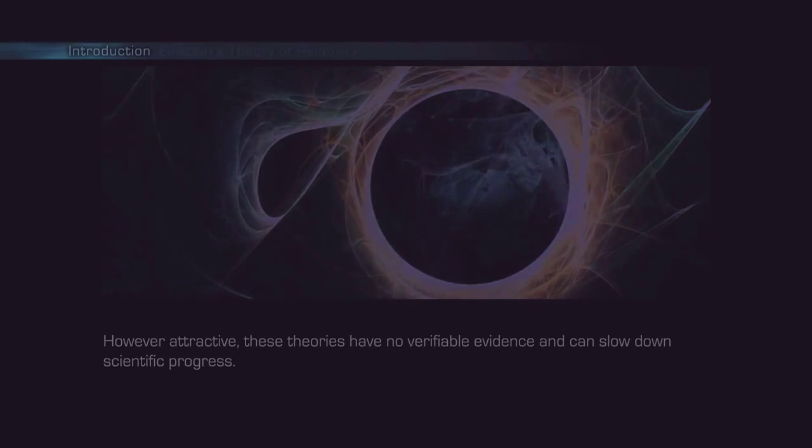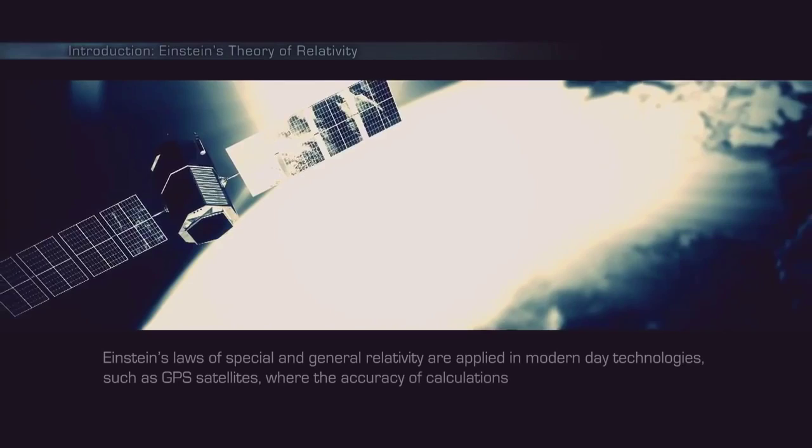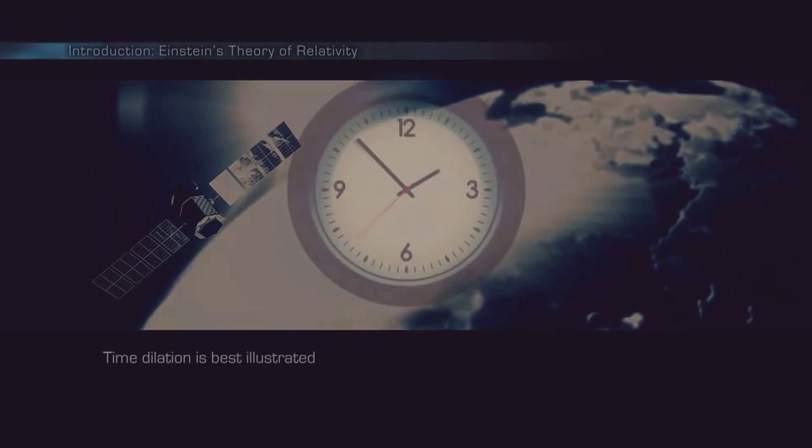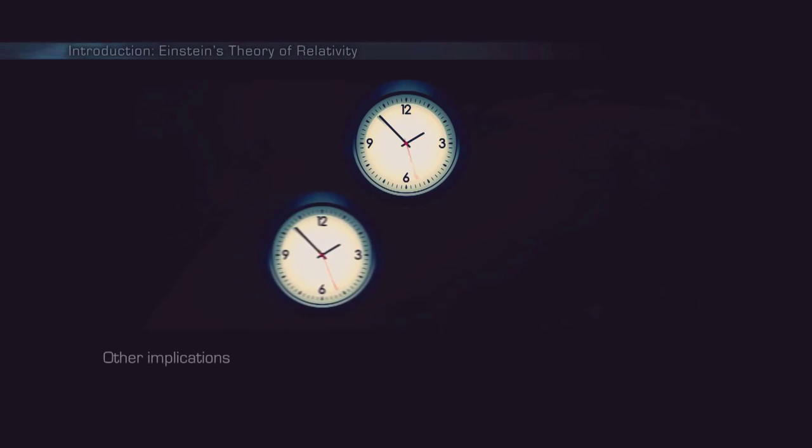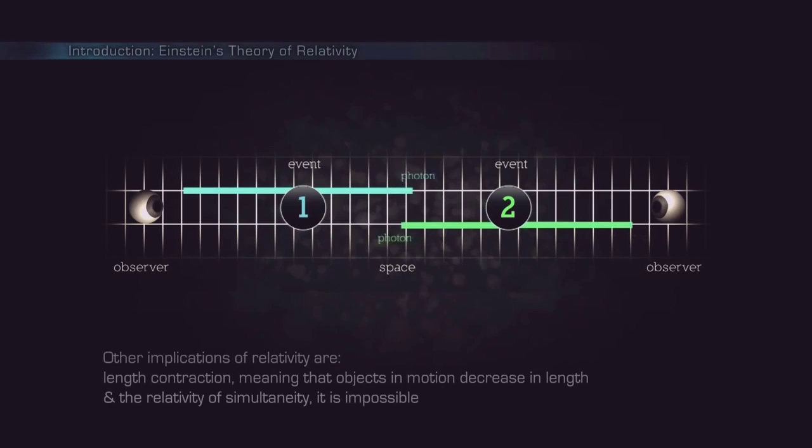Einstein's laws of special and general relativity are applied in modern-day technologies, such as GPS satellites, where the accuracy of calculations would drift more than 7 miles a day if consequences such as time dilation would not be taken into account. Time dilation is best illustrated by how moving clocks run slower. Other implications of relativity are length contraction, meaning that objects in motion decrease in length, and the relativity of simultaneity. It is impossible to say in an absolute sense whether two events occur at the same time when they are separated in space.